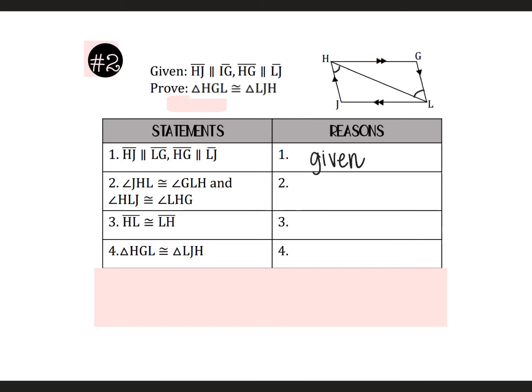And angle HLJ is congruent to angle LHG. So that's this angle. When you mark those, hopefully you're recognizing that those would be alternate interior angles.